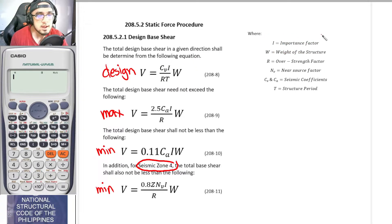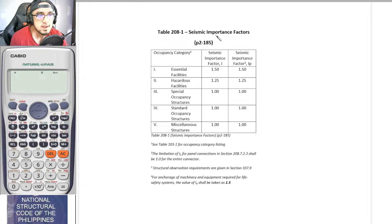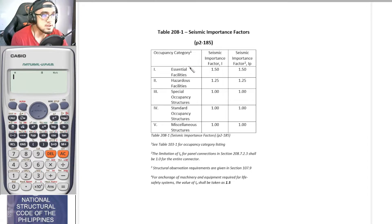For I, the importance factor, it is a factor indicating how important a certain structure is. It is given in table 208-1 on page 2-185 of the NSCP, and it depends on the occupancy type of the building. For example, a hospital is an essential facility, so its seismic importance factor I equals 1.5.